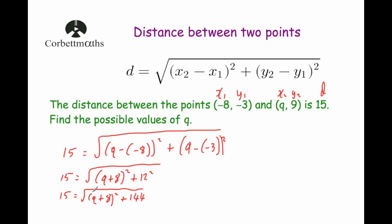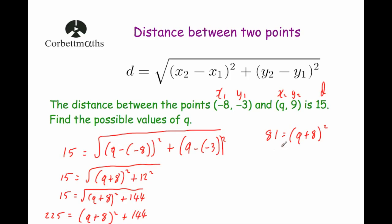Now I want to get rid of the square root sign, so I'm going to square both sides of the equation. That gives us 225 equals q plus 8 squared plus 144. Subtracting 144 from both sides leaves us with 81 equals q plus 8 squared. Square rooting both sides — remembering that a positive times a positive and a negative times a negative can both give 81 — we get positive or negative 9 equals q plus 8.